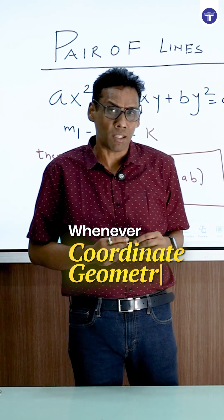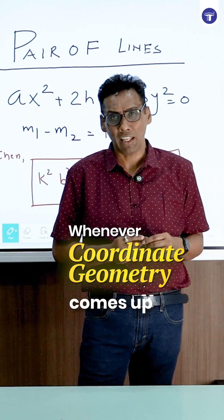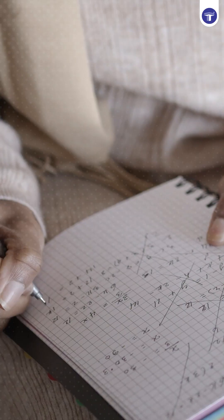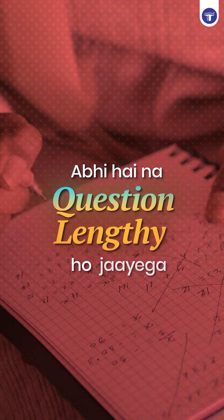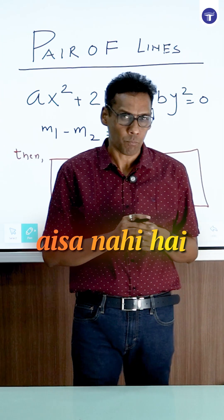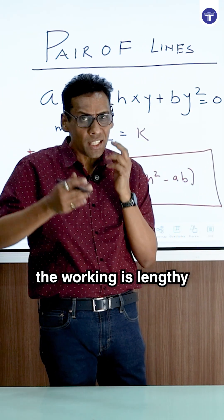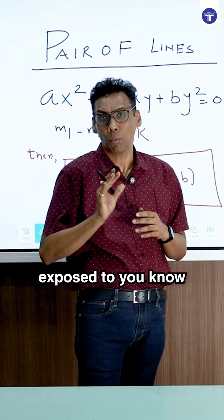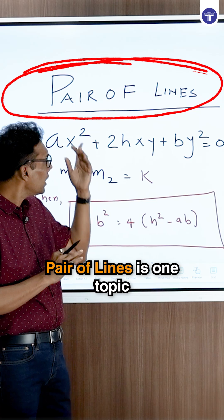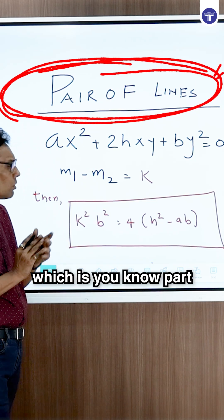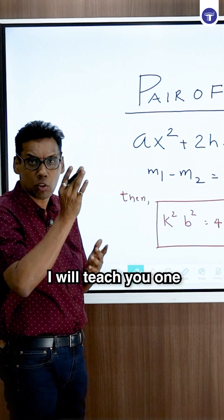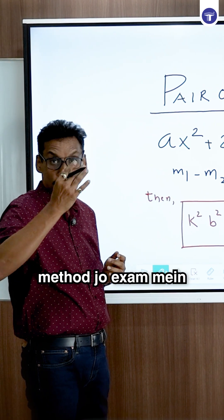Whenever coordinate geometry comes up, everybody has a general perception that the question and working will be lengthy. It's not like that. Working at length is only when you are not exposed to proper shortcuts. Pair of lines is one topic which is part of many exams. I'll teach you one method which helps a lot in the exam.